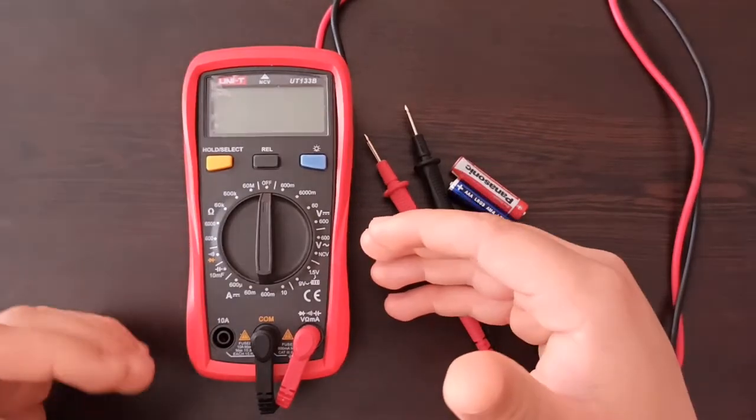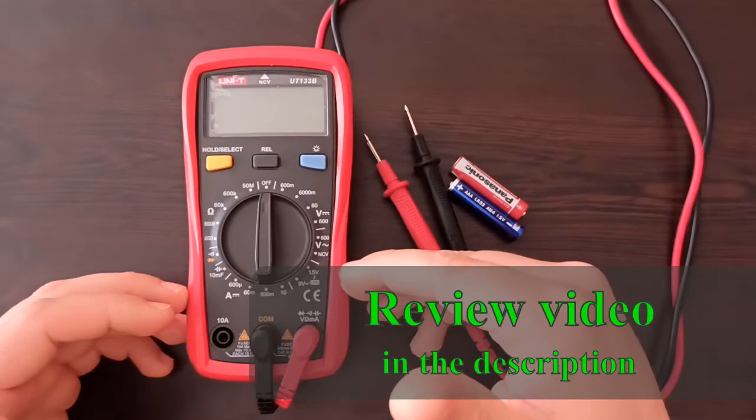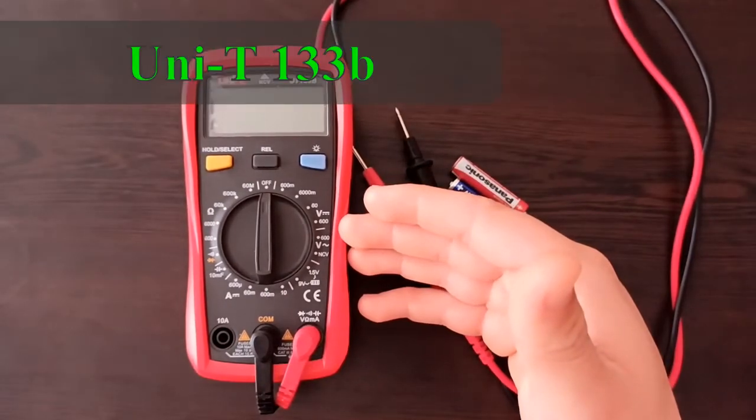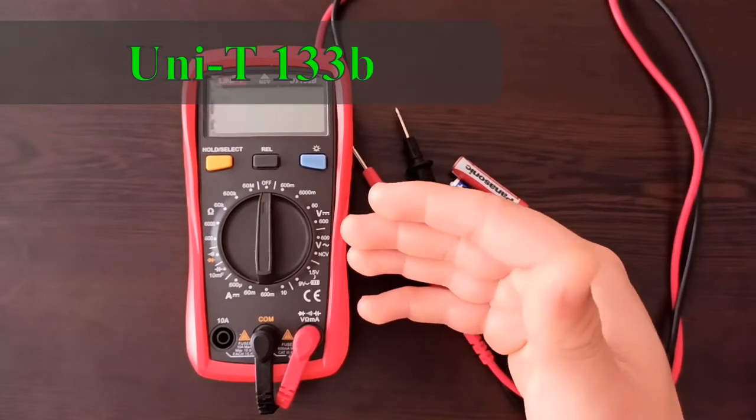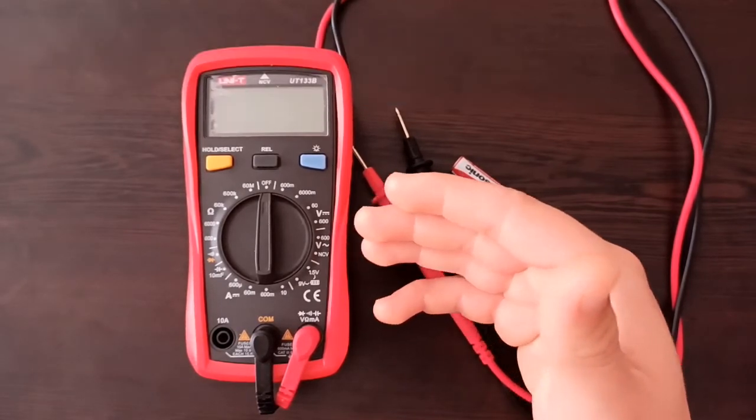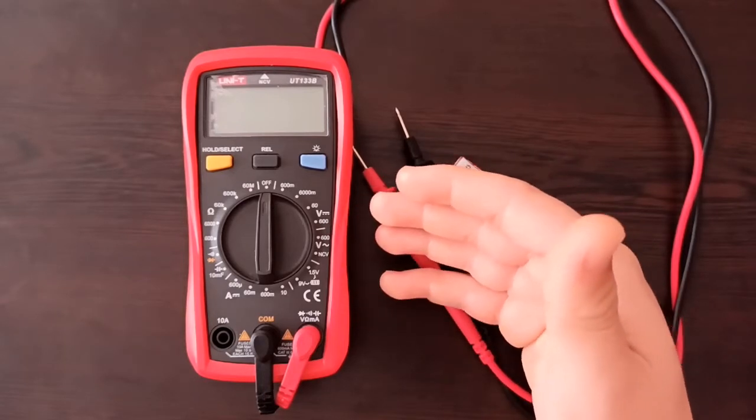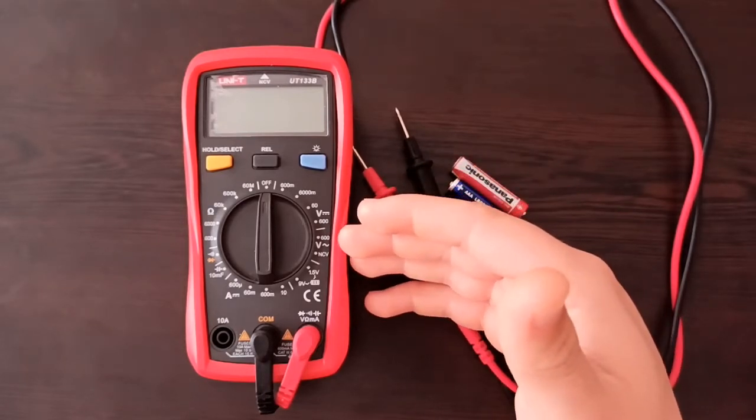If you want to check my multimeter review video, I will link that in the description. This multimeter has a wide range of voltage measurement functions up to 600 volts, both AC and DC. Today I'm going to show you the difference between AC and DC voltage and how to measure each one safely.